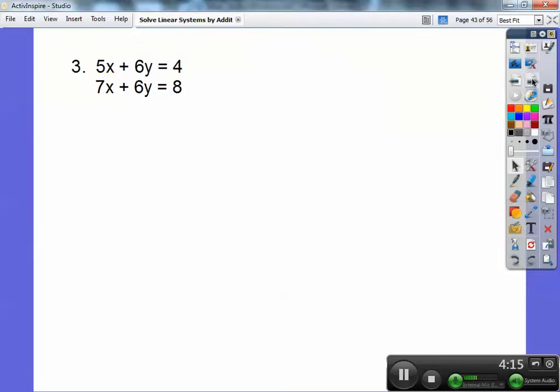So here's number 3. I'm going to take that top equation this time and multiply that by negative 1 because that's going to get me a negative 6y right there. That'll cancel out with this positive 6y. But this gets times negative 1, and this gets times negative 1 also.